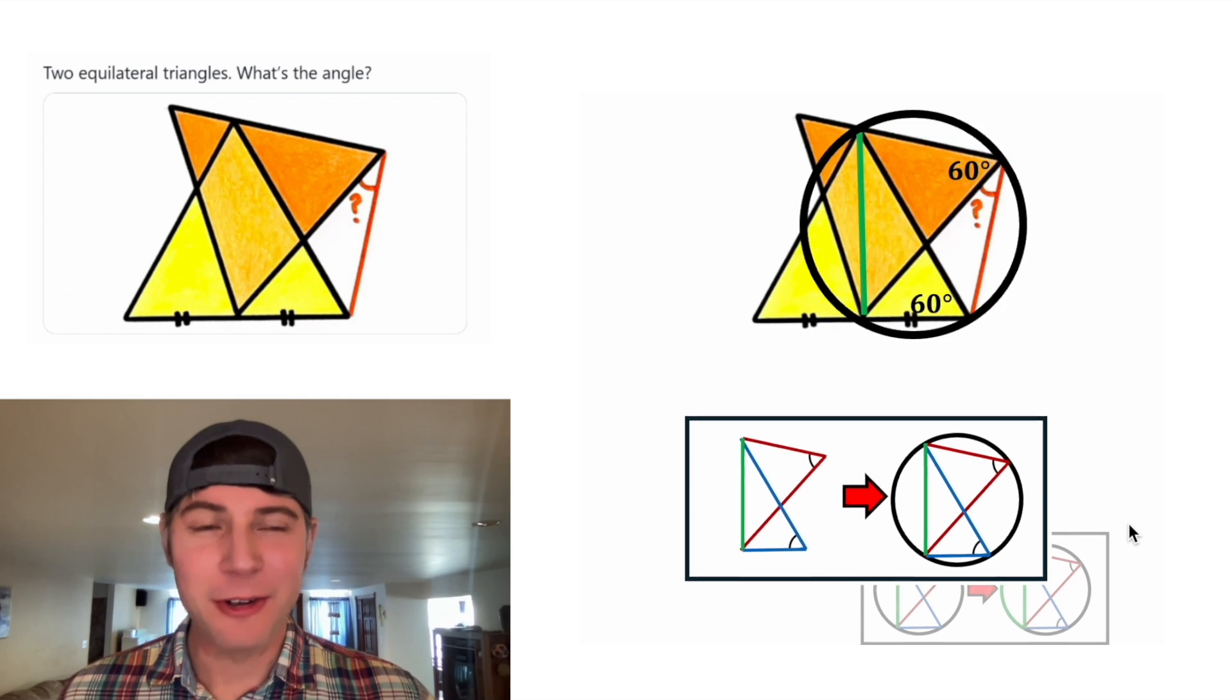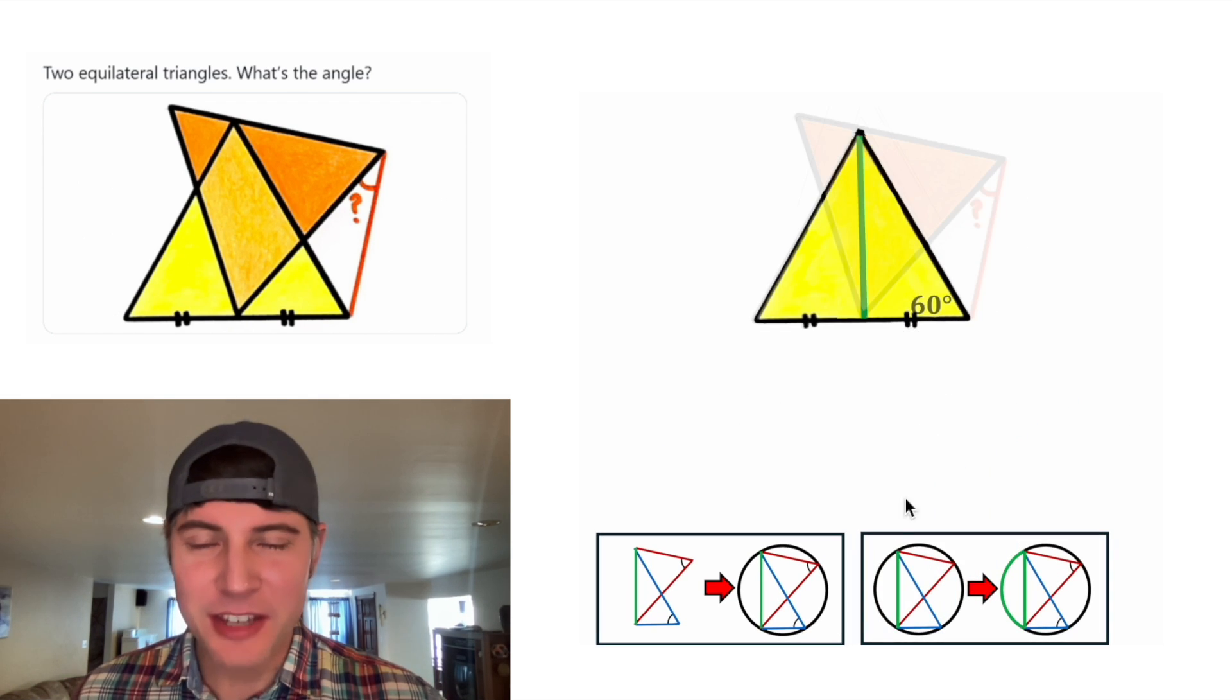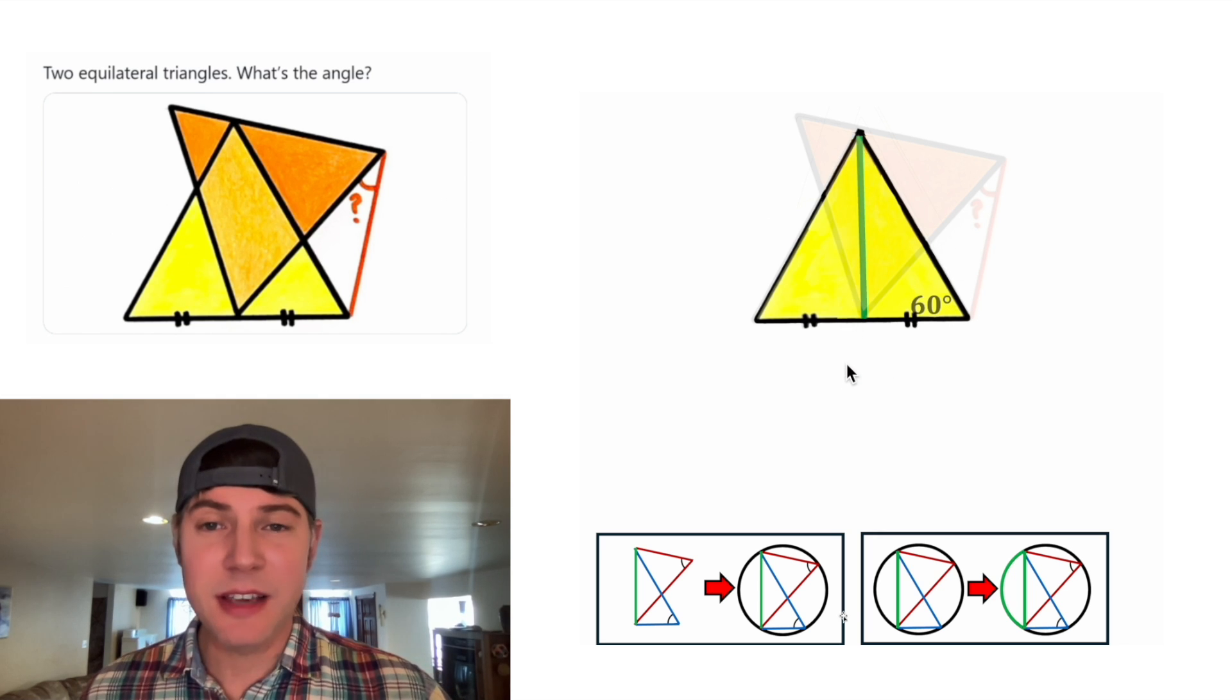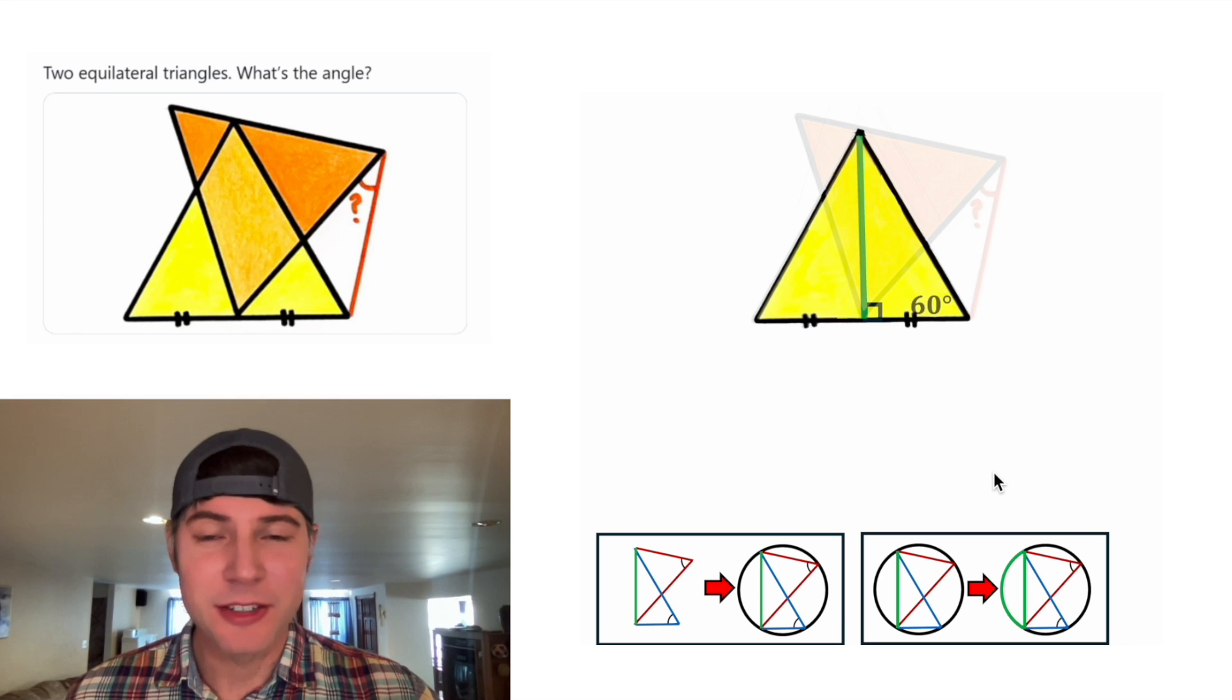Next, let's focus on this equilateral triangle. In an equilateral triangle, the median is the same thing as the perpendicular bisector, so we know that this will be at right angles. And since this one is 60 and this one is 90, that means this angle right here is going to be 30.